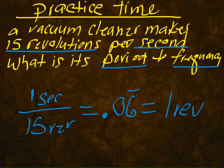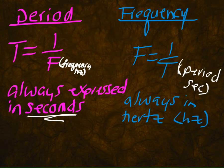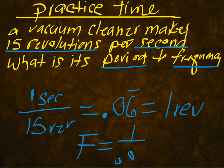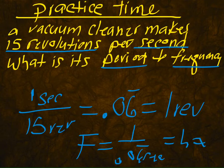And now what is our frequency? Remember, frequency uses the formula F equals one over T. So you take F equals one over 0.06 repeating seconds — it's going to give you something in Hertz. You can leave it like that, or if you really want to solve it, one divided by 0.06 repeating is going to give you something like 16 Hertz.